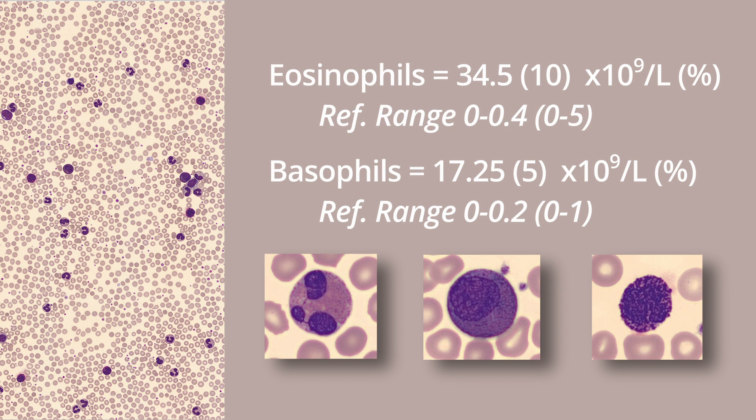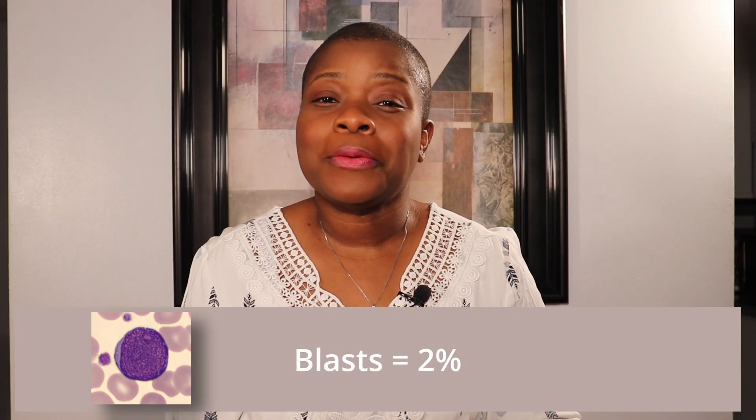The eosinophils are 34.5, or 10 percent, and the basophils are 17.25, or 5 percent. Both of these are increased and it looks like we have precursor eosinophils. There are blast cells, but only about 2 percent. As a note, blast cells are reported in absolute values, but when you are talking about them you usually state them as a percentage because you need to know how they are relative to the whole.